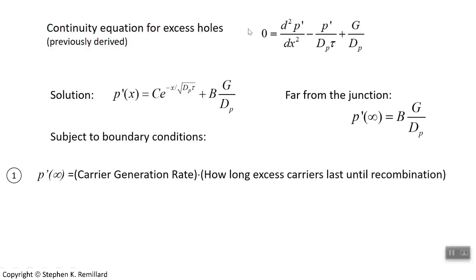The first boundary condition we'll use is far away from the junction. And so p prime at x equal to infinity, x equal large, it should just be the rate that electron hole pairs are generated times how long they last before they annihilate. And that's g tau. So the excess hole density far from the junction is just the product of the generation rate times the recombination time. That's one boundary condition.